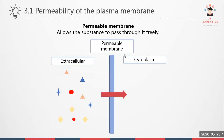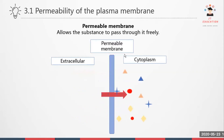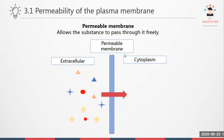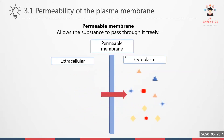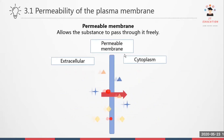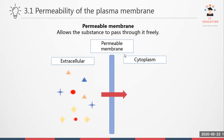Let's discuss further the permeable membrane. It means it allows substances to pass through it freely. Just like the picture here, we can see that everything can pass through from the extracellular to the cytoplasm. So this is a permeable membrane.